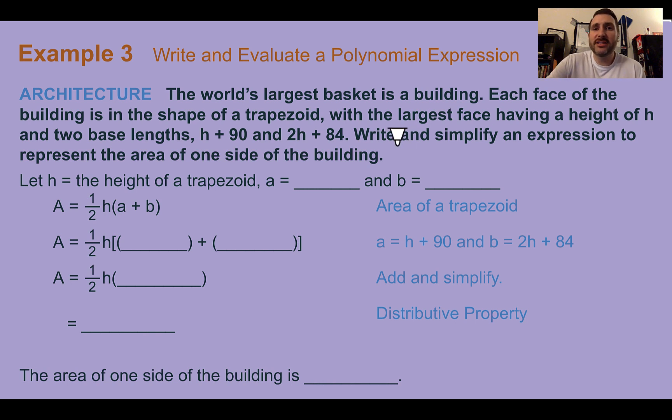First, the fact that it says write and simplify an expression tells me there's not actually going to be an answer. There's just going to be something at the end that has some h's in it and probably some other numbers. So let's let h be the height of the trapezoid. And then in the formula for a trapezoid, which we can see right here, a and b are the two bases. So let's say a is h + 90 and b, the other base, is 2h + 84.